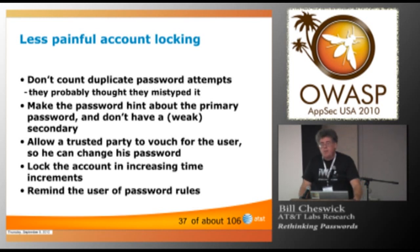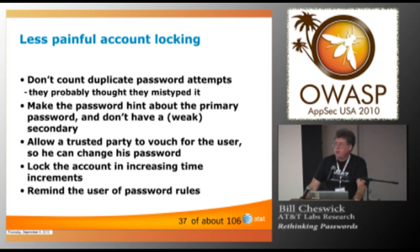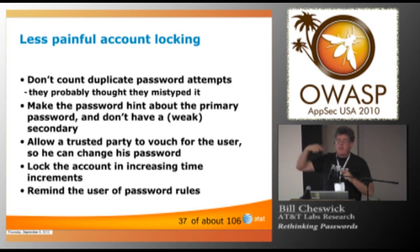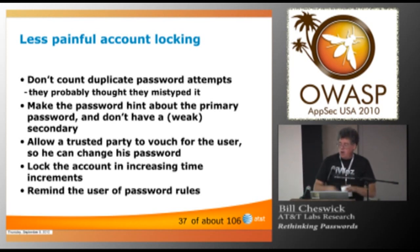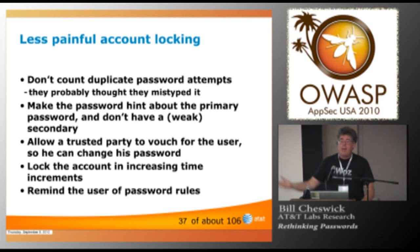How about this? Allow a trusted party to vouch for the user. You have an account with the bank. Your wife has an account with the bank. Same account, but different access. I've forgotten my password. Shouldn't there be some little protocol where she could log in, prove she is she, and the bank has previously said we can vouch for each other. And she can say, I know he's here. I'm logging myself in, and he's going to type his new password now. That seems like a nice usability thing. It gets the bank out of the loop.